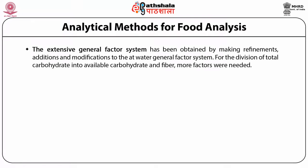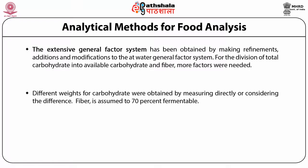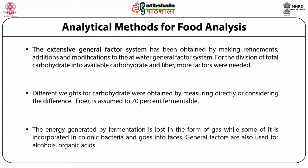The extensive general factor system has been obtained by making refinements, additions and modifications to the Atwater general factor system. For the division of total carbohydrate into available carbohydrate and fiber, more factors were needed. Monosaccharides as an added factor for available carbohydrate was added by Southgate and Durnin. Fiber is assumed to be 70% fermentable. The energy generated by fermentation is lost in the form of gas, while some is incorporated in colonic bacteria and goes into feces.